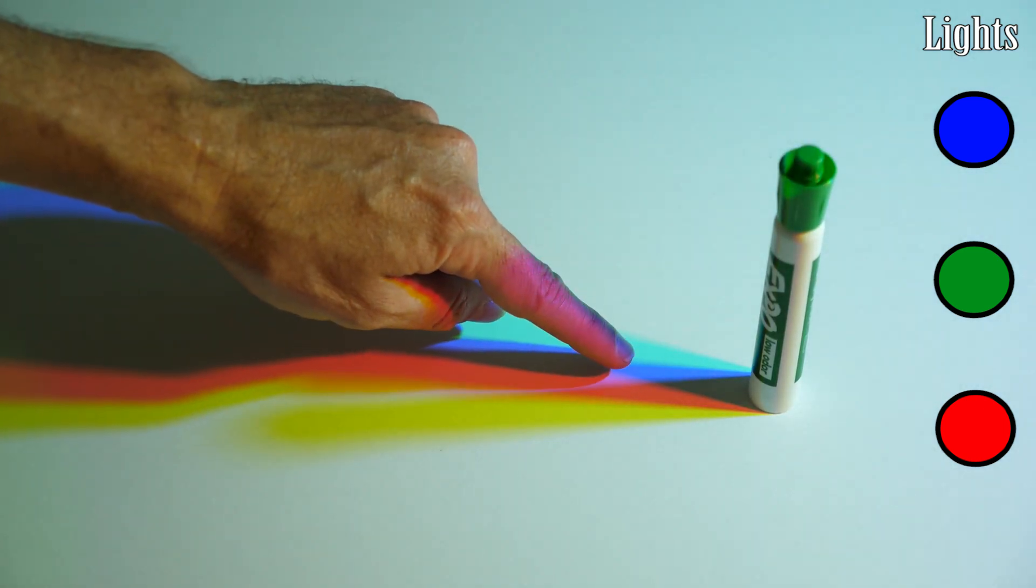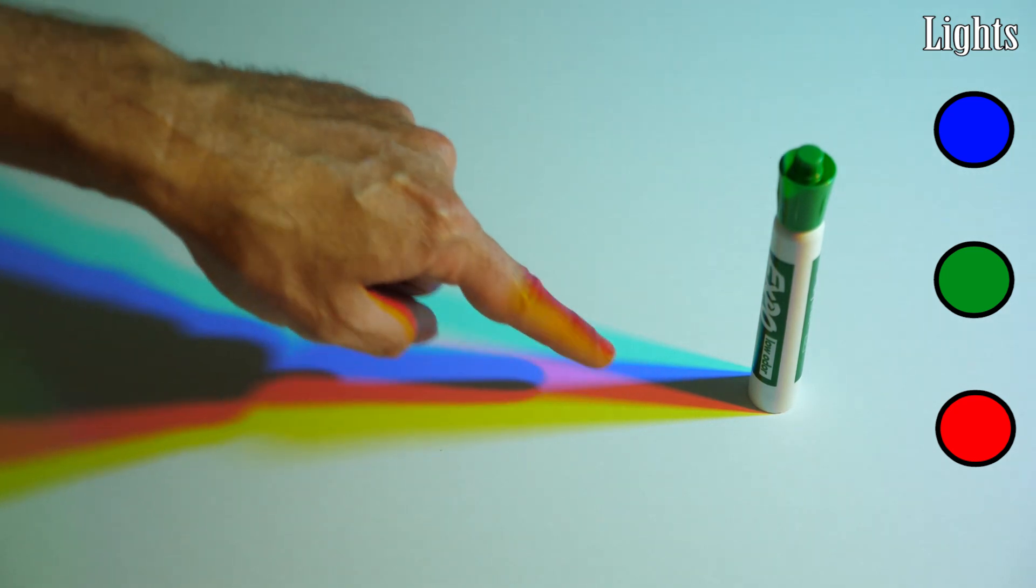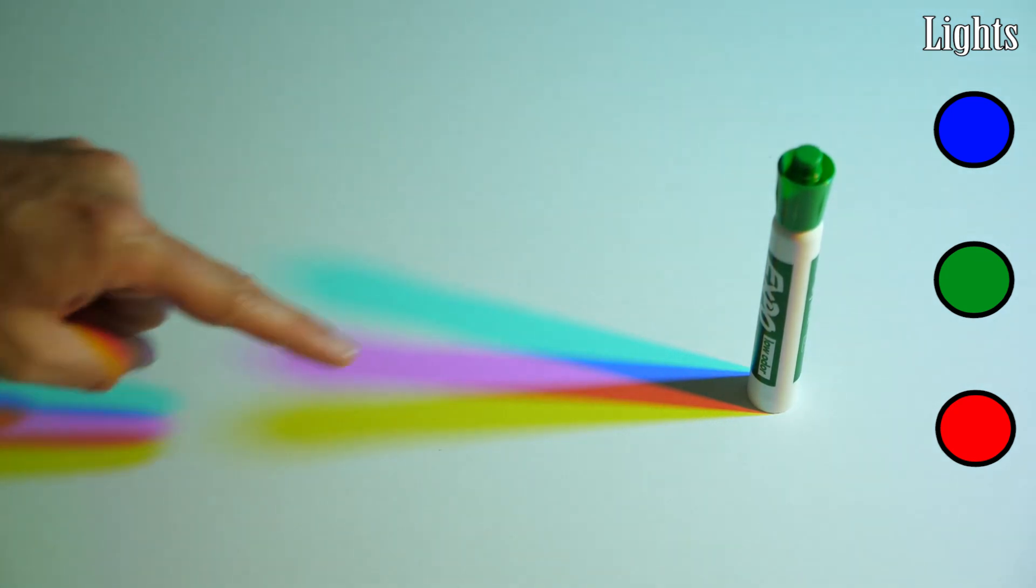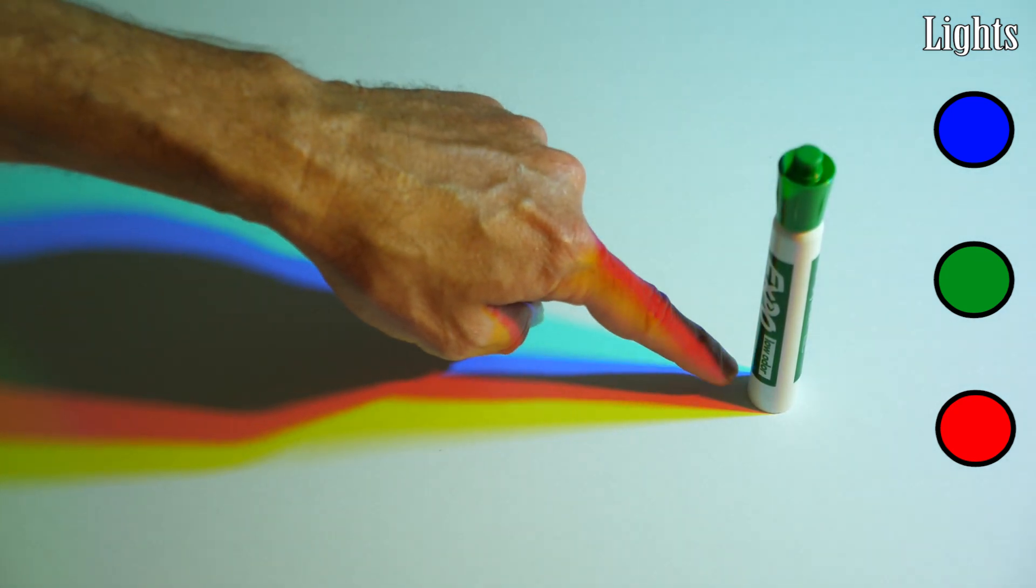And then you can see there's two locations here where red and green are blocked, and you get the original blue. And then there's a location here where blue and green are both blocked, and you get the original red. But the shadow right in the center here is the one I'm interested in. What color is this?